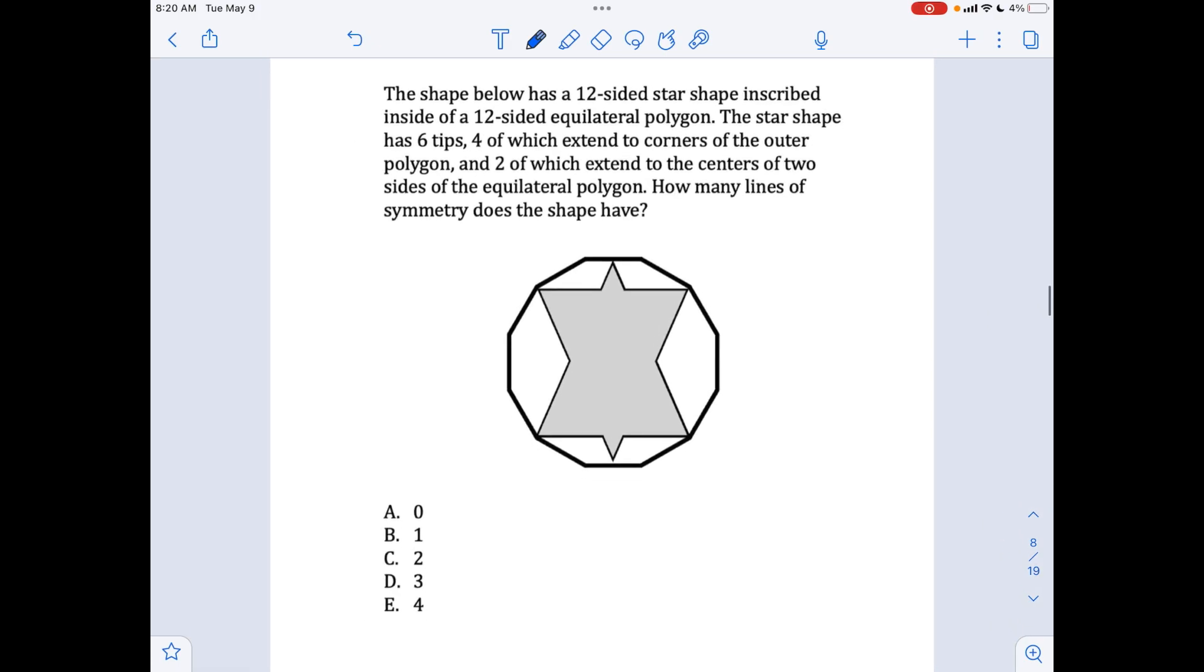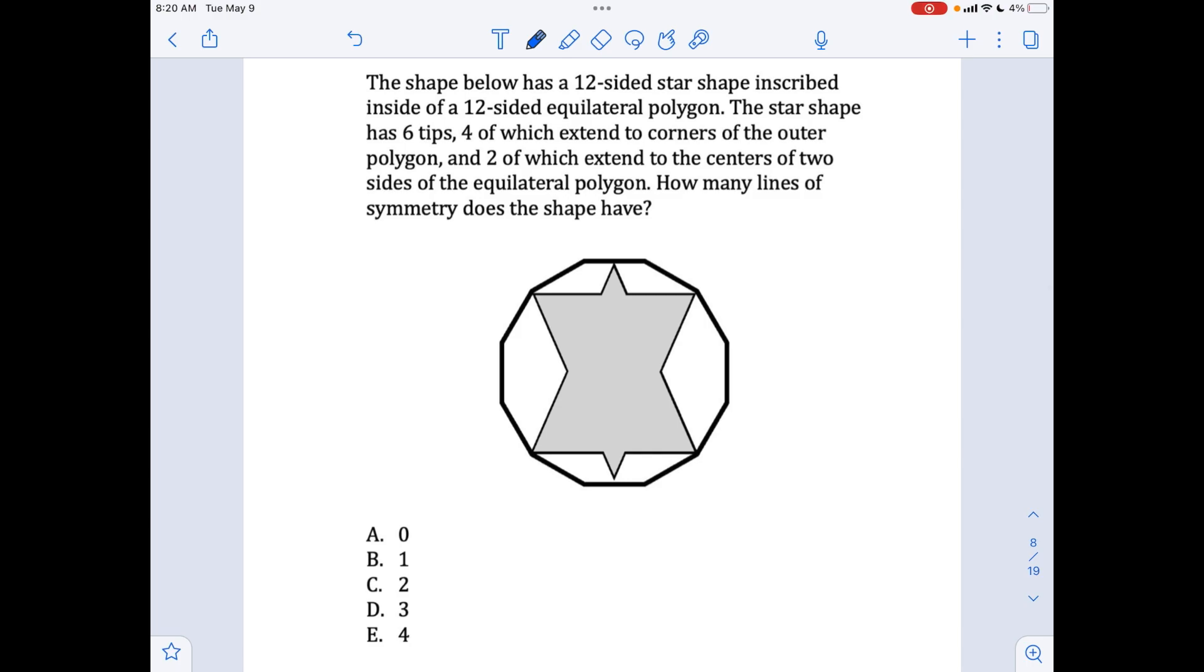Moving on. Finding lines of symmetry is the next one. The shape below has a 12 sided star shape inscribed inside of a 12 sided equilateral polygon. The star shape has six tips, four of which extend to the corners of the outer polygon, and two of which extend to the centers of the two sides of the equilateral polygon. How many lines of symmetry does the shape have? So a line of symmetry is basically a line that acts as a mirror. For example, we know that this is a 12 sided shape and this is also a 12 sided shape on the inside. So from top to bottom, clearly, the left and right are the same. From if we make a horizontal line, the same thing happens. Where things get tricky is if you try to make lines like this. Like yes, what's here is technically similar to what's on the other side, it's a mirror in a way, but it's not a one to one mirror.